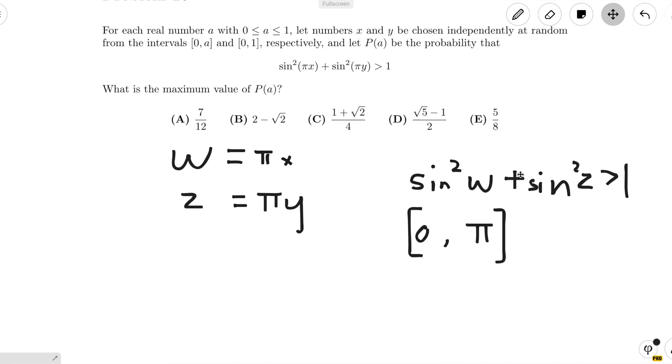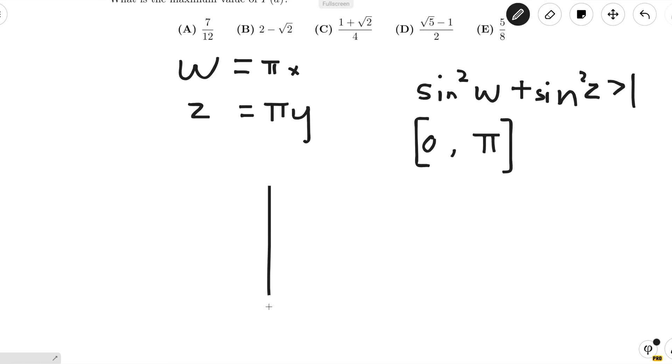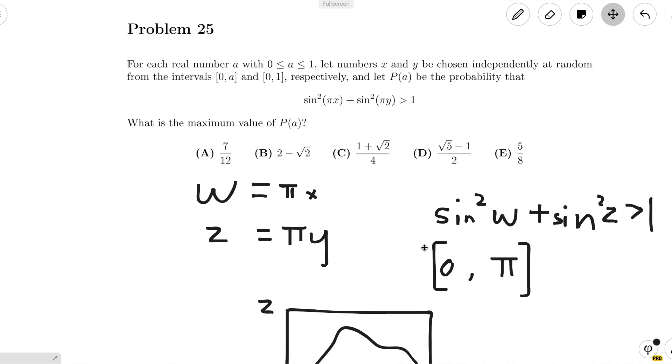Now we can draw a square representing the values of w and z. So we have the w-axis horizontally and the z-axis vertically. And for whatever region that works for w and z, for the case 0 ≤ a ≤ 1,